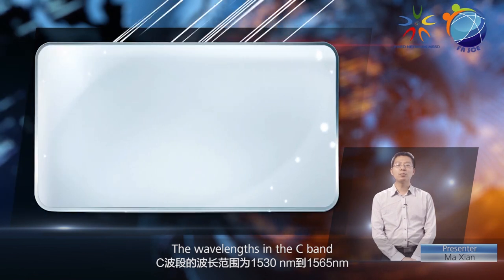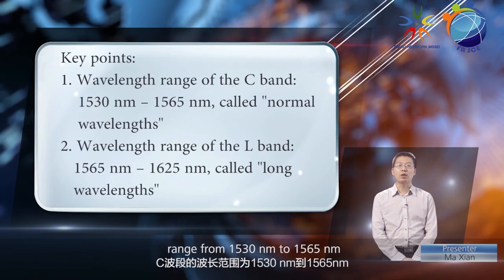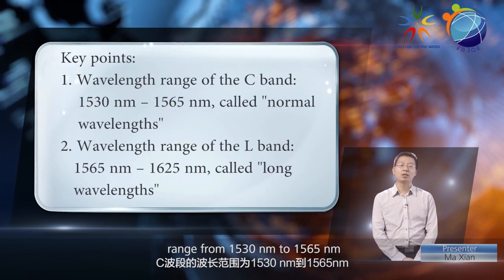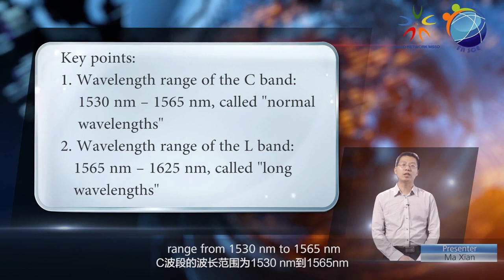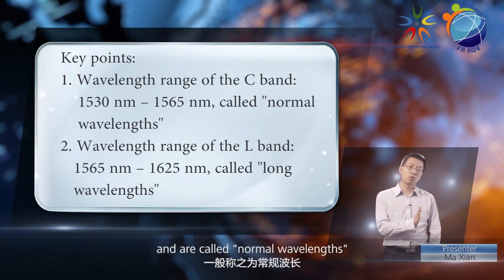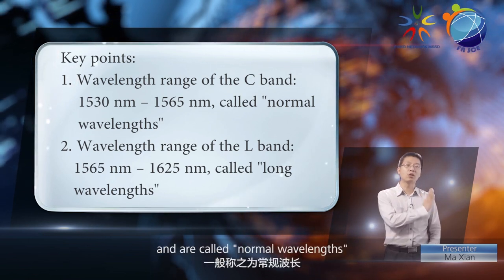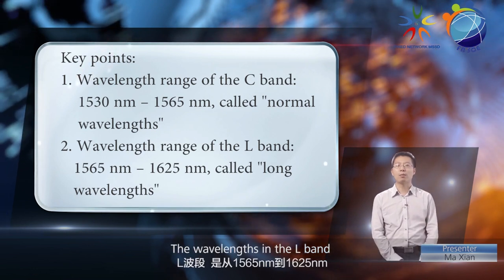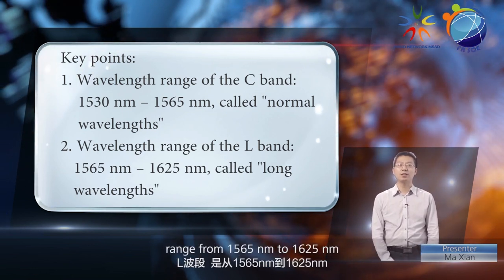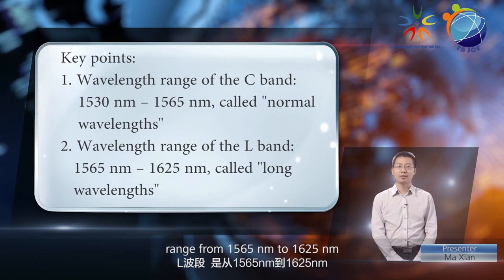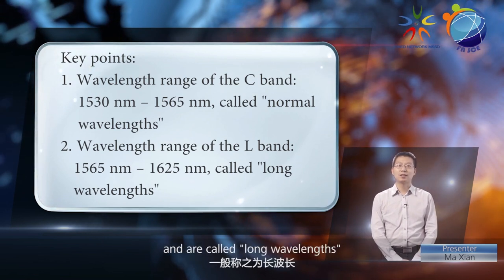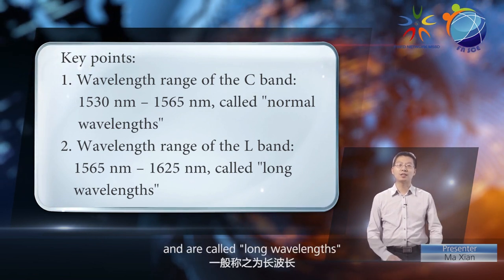The wavelengths in the C-band range from 1,530 nanometers to 1,565 nanometers and are called normal wavelengths. The wavelengths in the L-band range from 1,565 nanometers to 1,625 nanometers and are called long wavelengths.